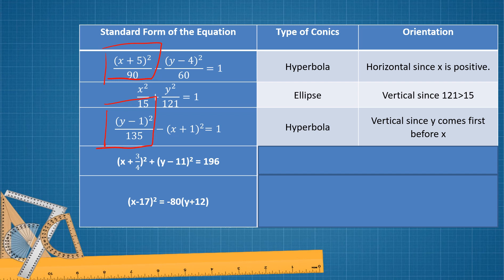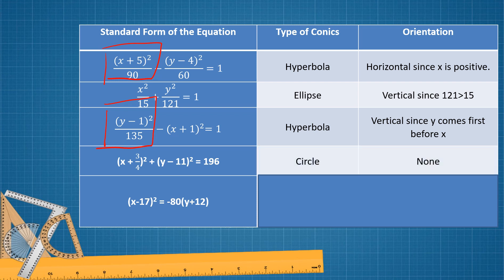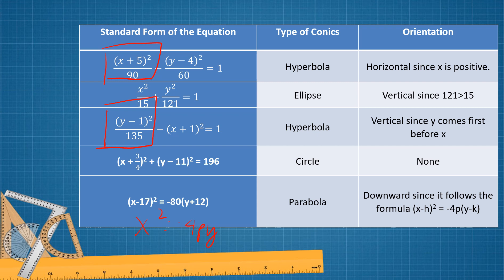Next, since there is no fraction involved and there is x squared following x squared plus y squared equals r squared, the type of conics is circle and the orientation is none. The last example follows x squared equals negative 4py, which implies the type of conics is parabola and the orientation is downward, because x squared is present and the other side has a negative sign.